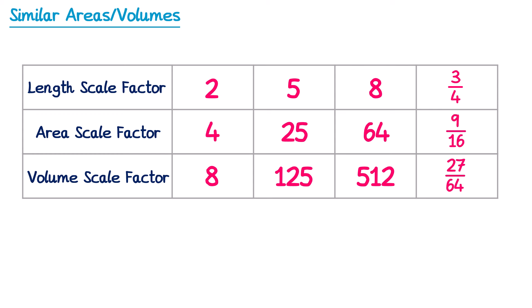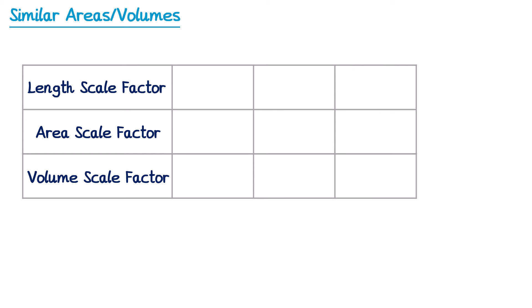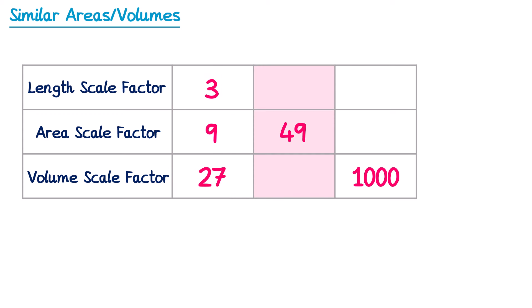In an exam question you could be given some scale factors and asked to work out the others. If the length scale factor is 3, the area scale factor is 3 squared which is 9, and the volume scale factor is 3 cubed which is 27. In the next column we only have the area scale factor of 49. To find the length scale factor we reverse the process — instead of squaring, we square root. The square root of 49 is 7, giving us the length scale factor. We then cube 7 to get the volume scale factor: 7 to the power 3 is 343.